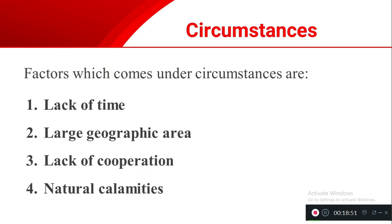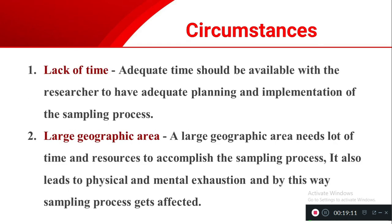The third factor is the nature of circumstances, with four sub-factors: lack of time, large geographic area, lack of cooperation, and natural calamities. Lack of time means you must plan the sampling process carefully and take adequate time to decide which technique to implement. Selecting a technique hastily may lead to a flawed sample and sampling bias.